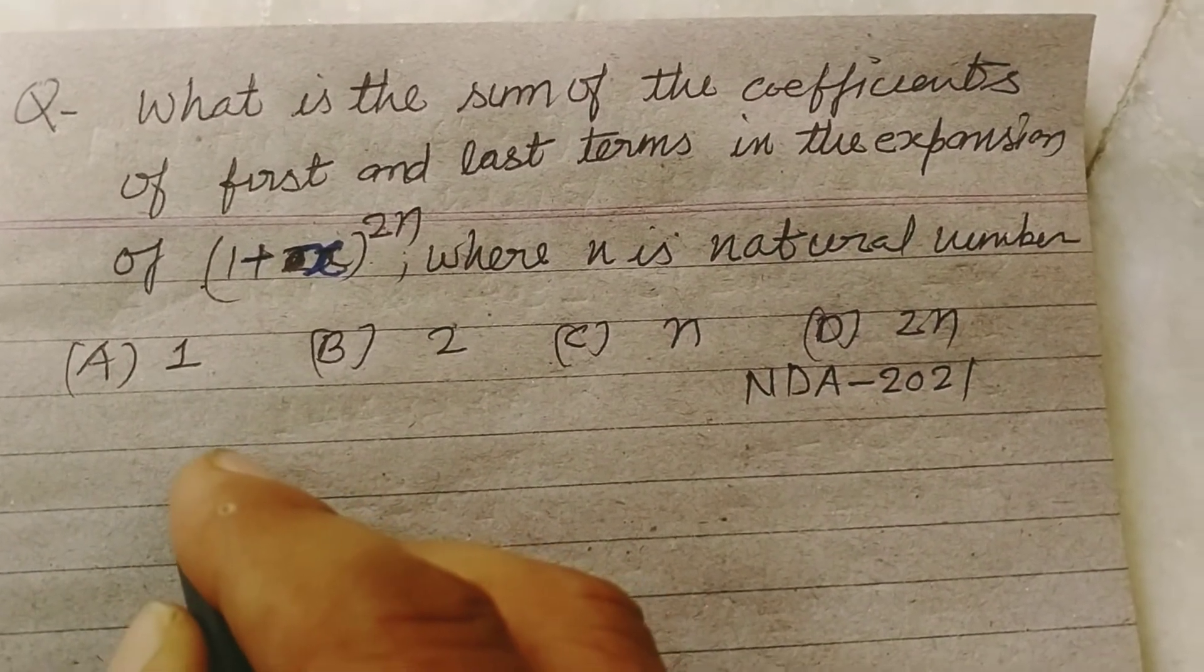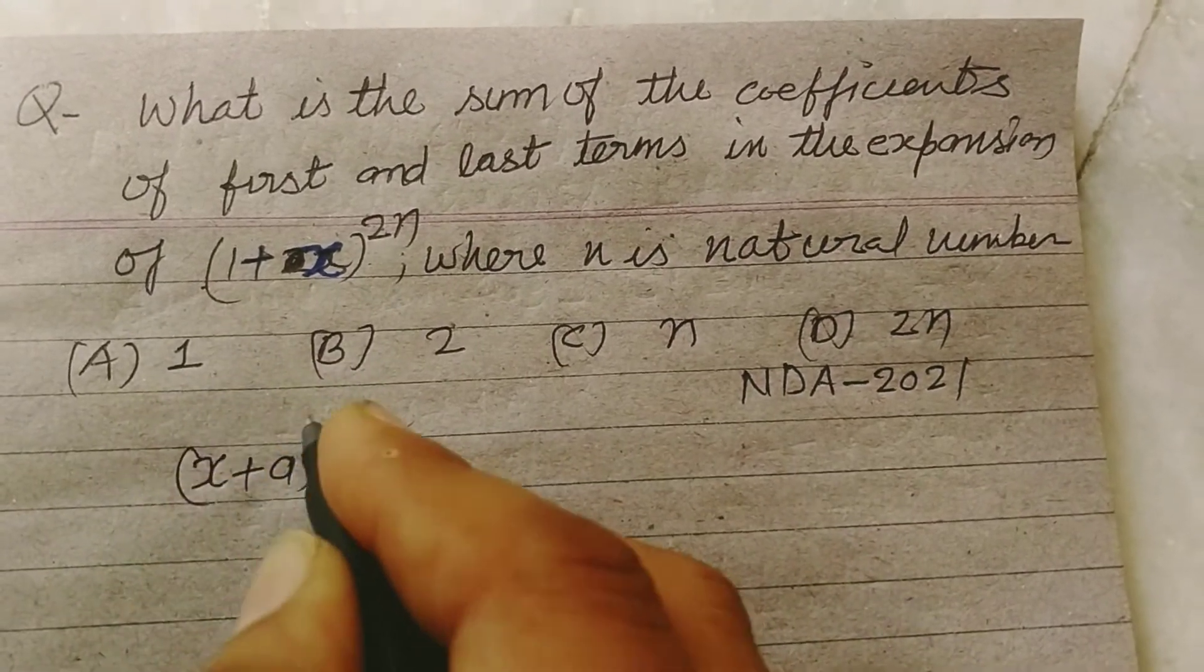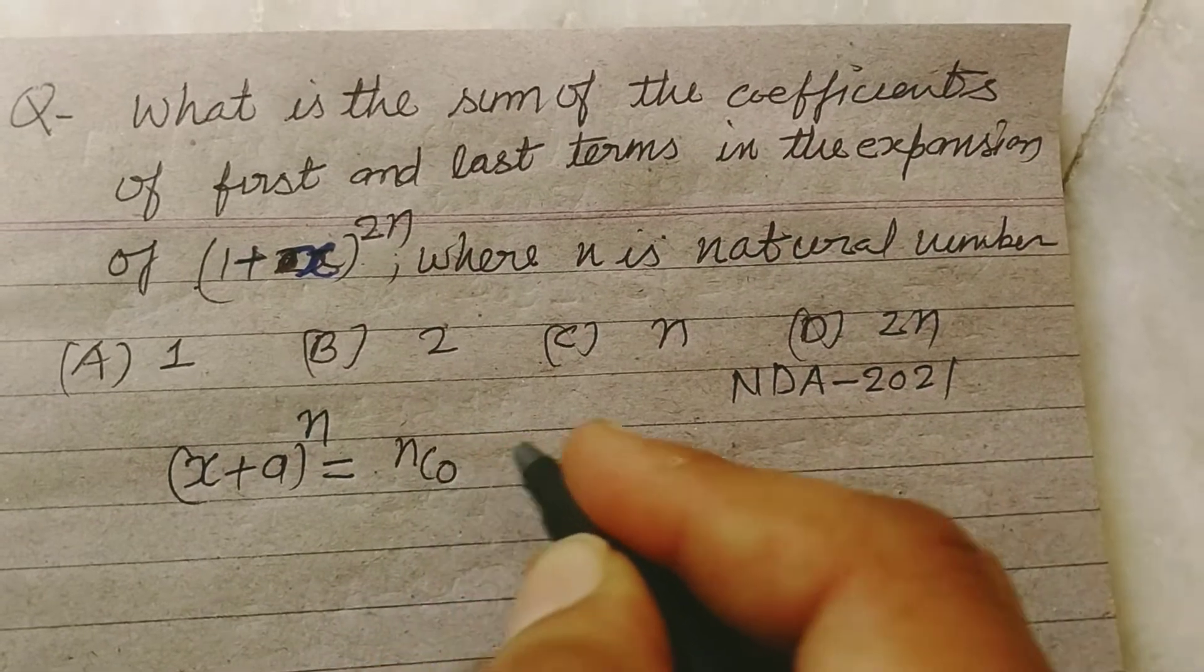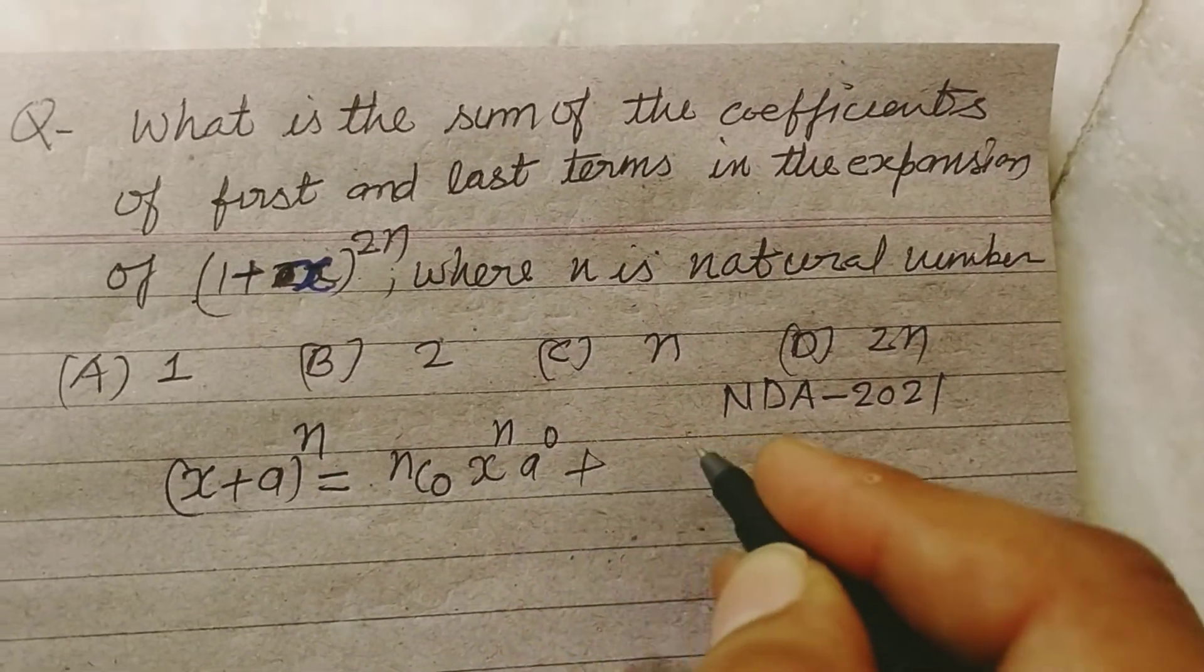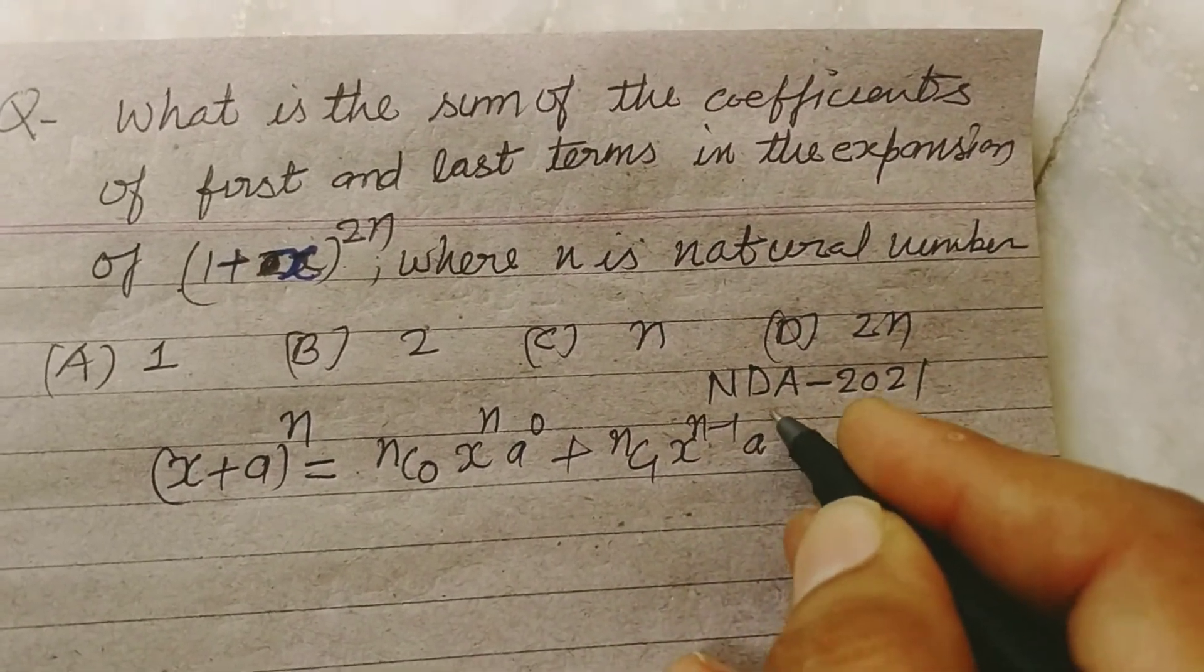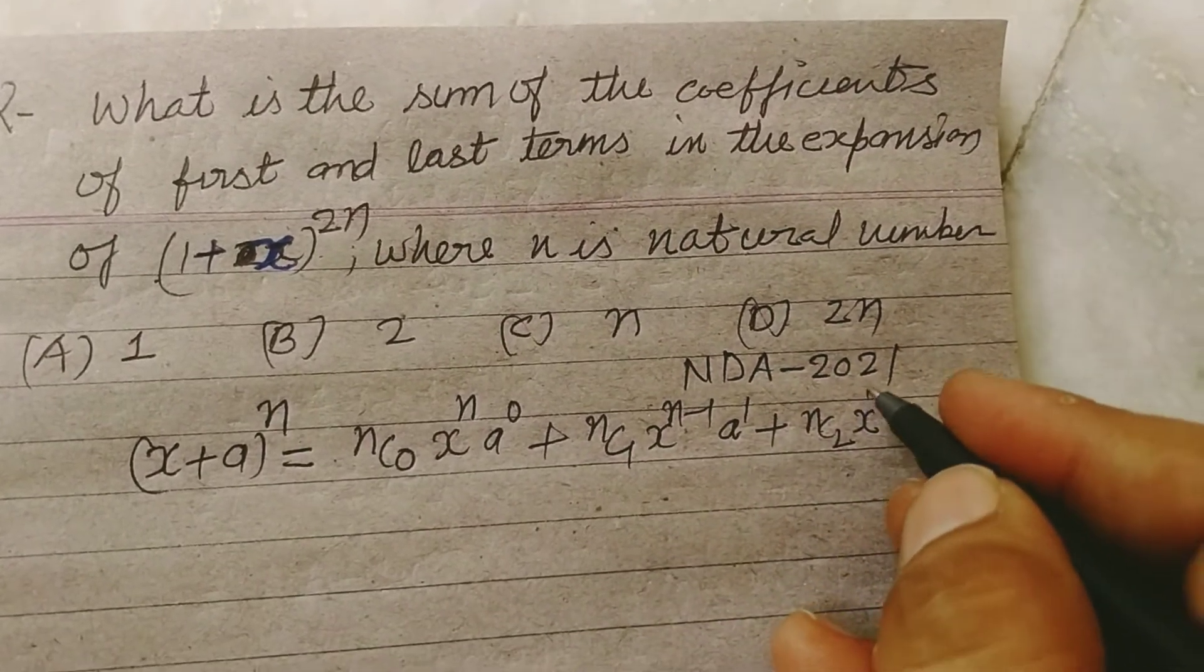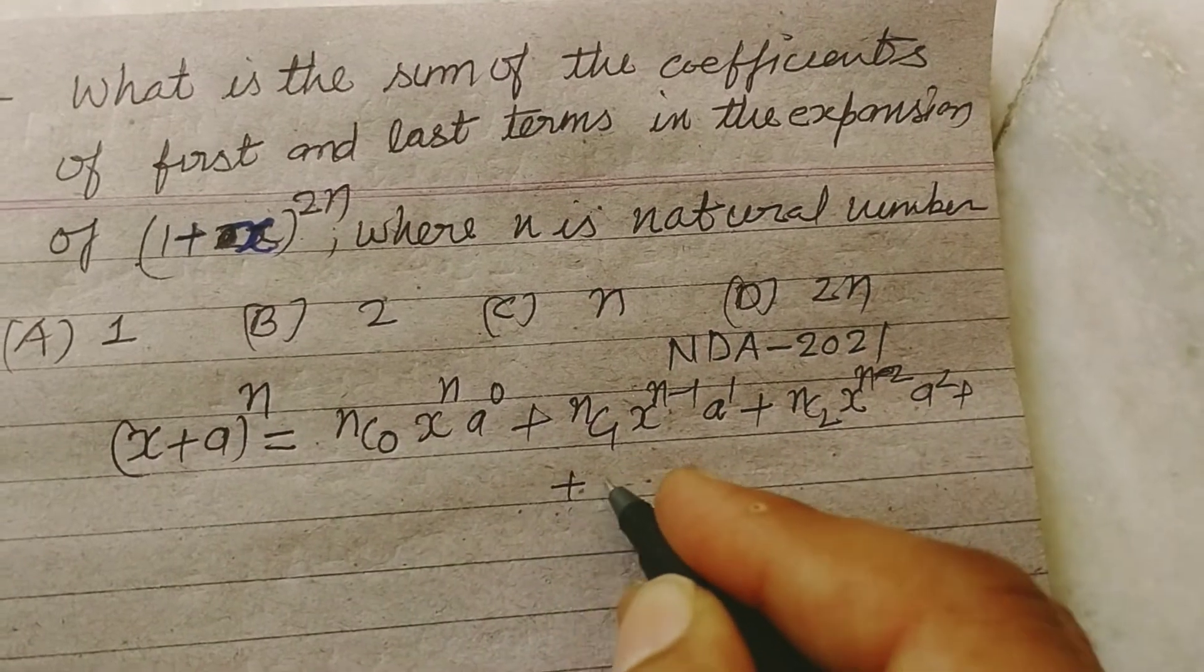As you know, the binomial theorem x plus a to the power n expands in this way: nC0 x to the power n, a to the power 0, nC1 x to the power n minus 1, a to the power 1, nC2 x to the power n minus 2, a squared, plus and so on.